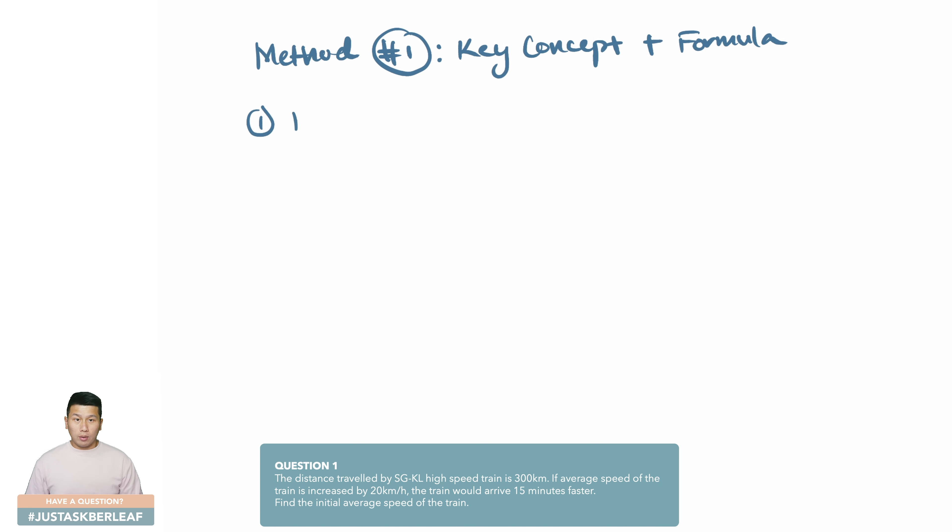Method number one, which is to identify the key concepts and formula. A key concept is basically a topic that you have learned in math. For instance, the obvious one in this question would be that of speed, and hence the relevant formula you can find would be that of what we always know: speed equals to distance over time. To make things easier, it's good to list out the pieces of information that is required in the formula. We have the distance is 300 km.